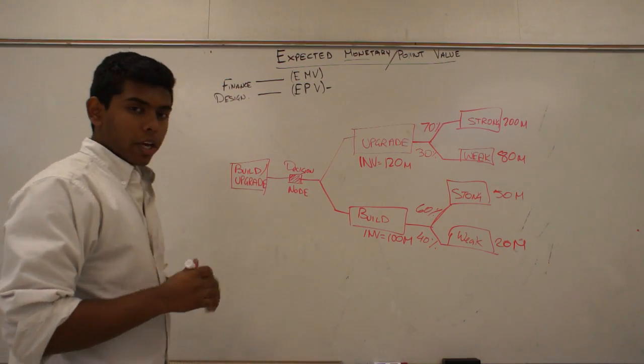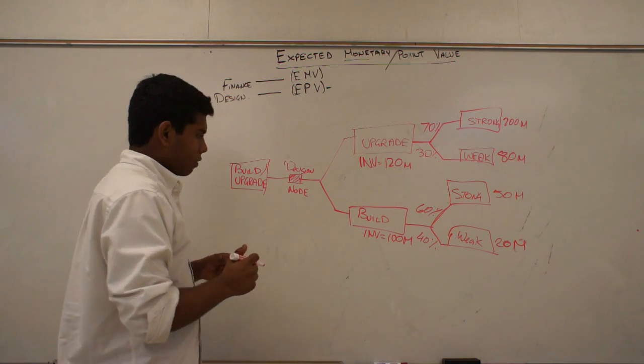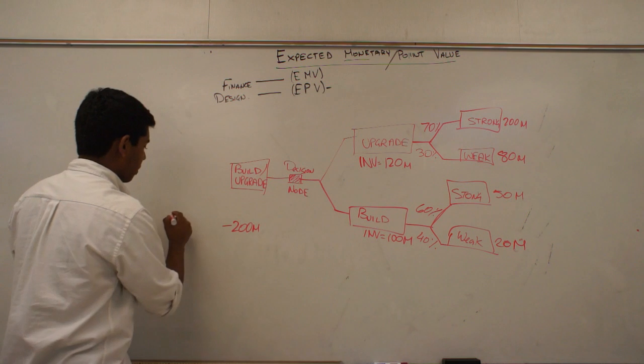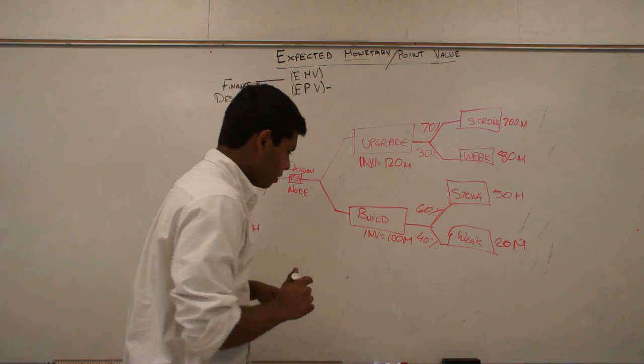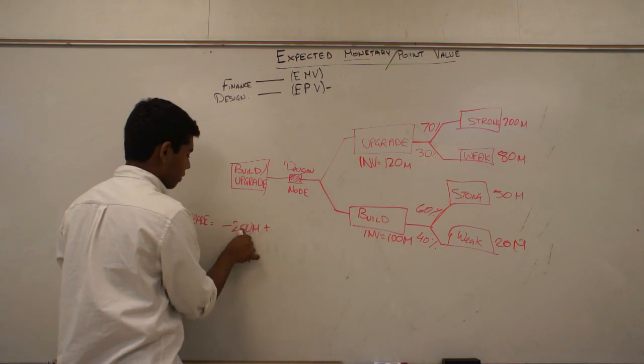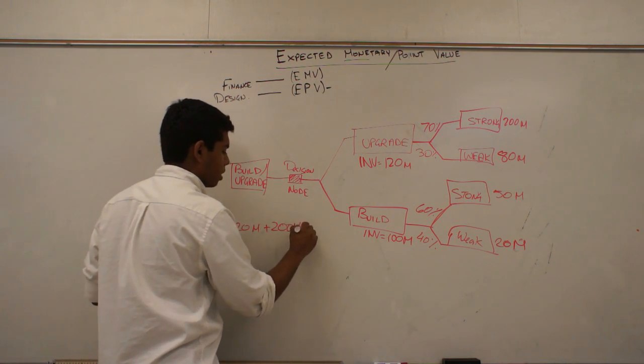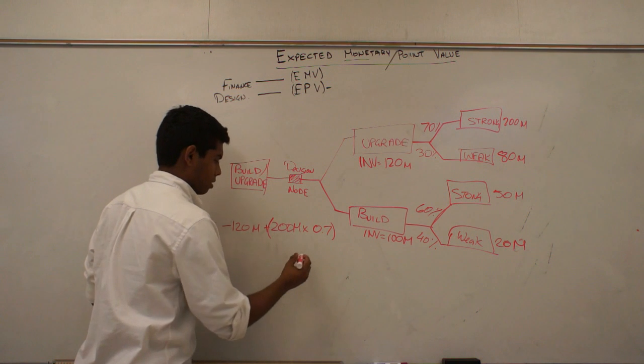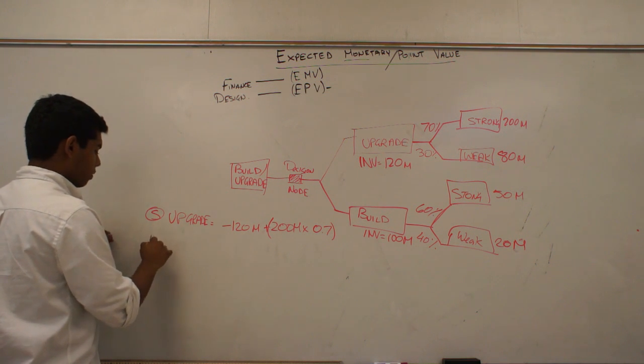So to calculate which decision we should make, we should look at first the investment. So minus $120 million for upgrade. We do minus $120 million and we do plus this $200 million. Oh sorry, this is $120. So I would have to erase that. This is $120. And plus $200 million times 70%, which is 0.7. And this is in brackets, right? And this is for a strong market. Strong, upgrade.